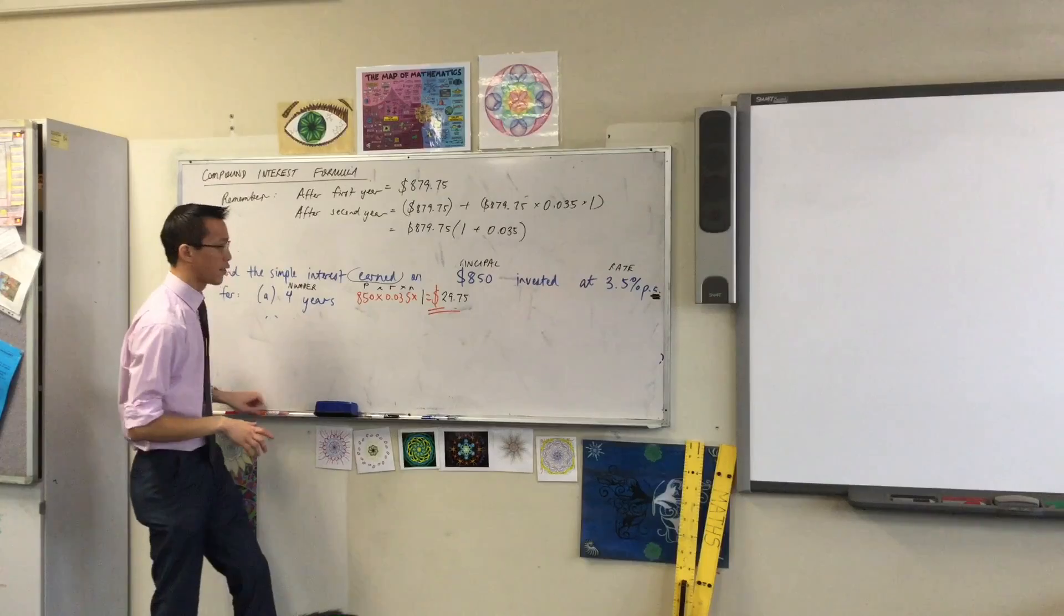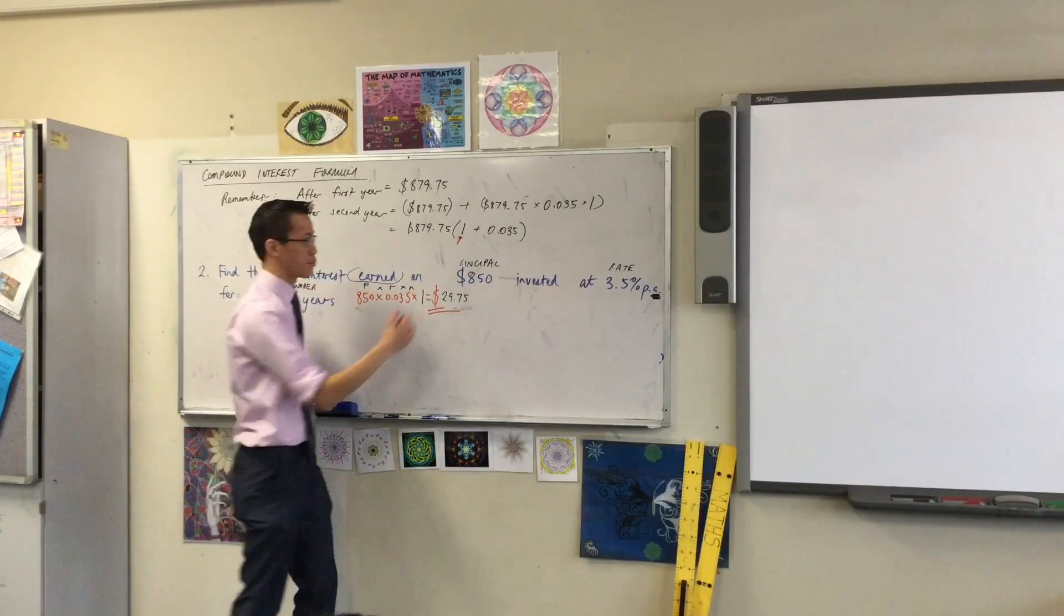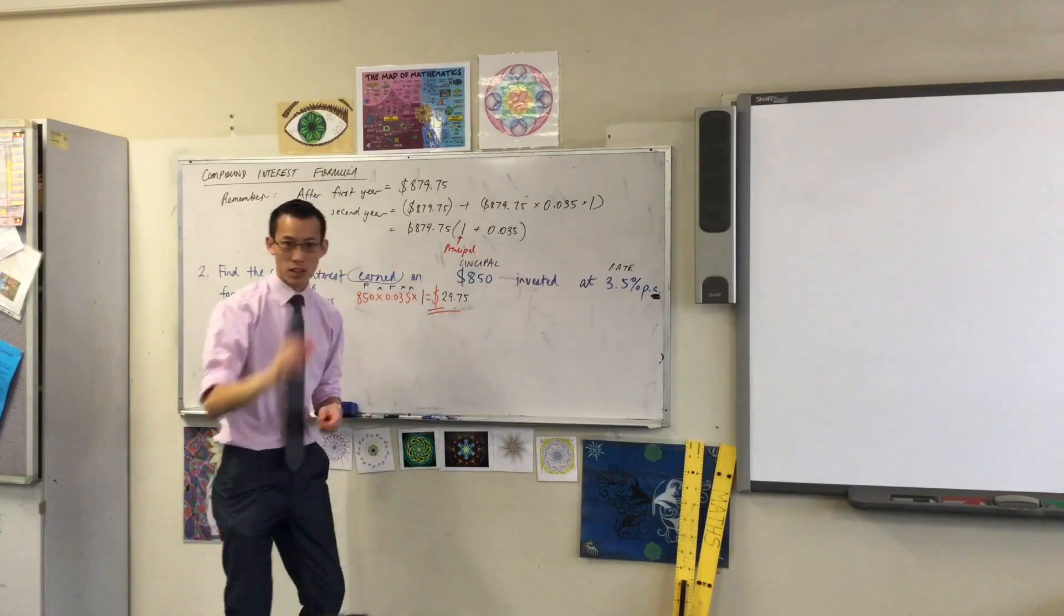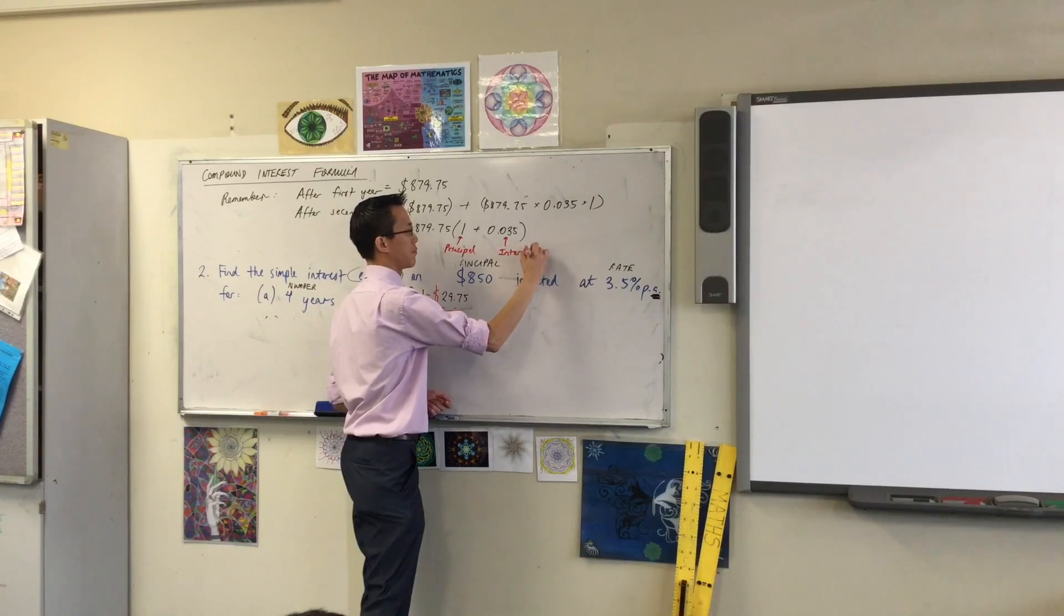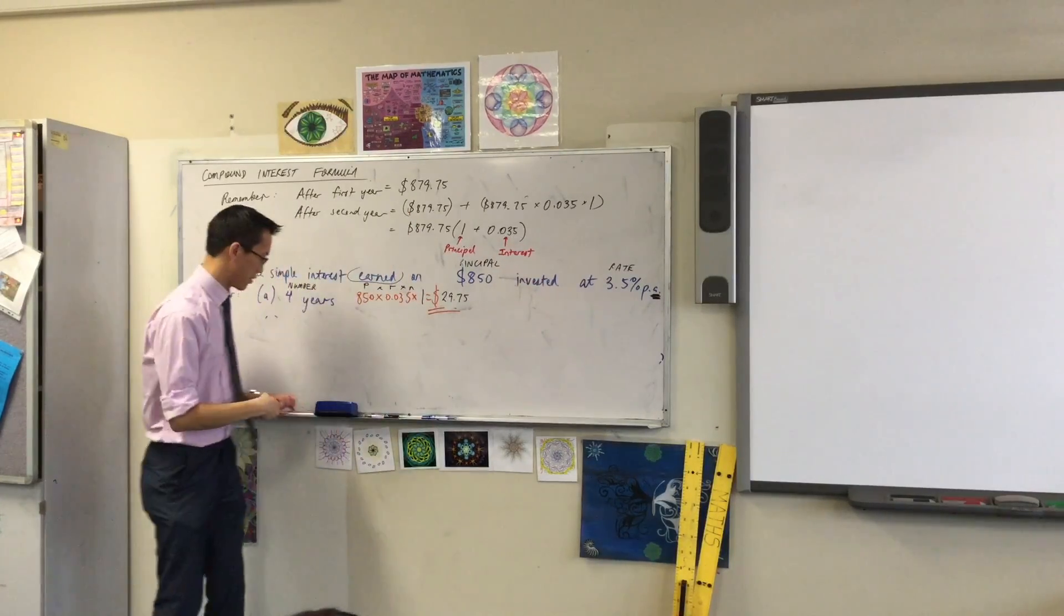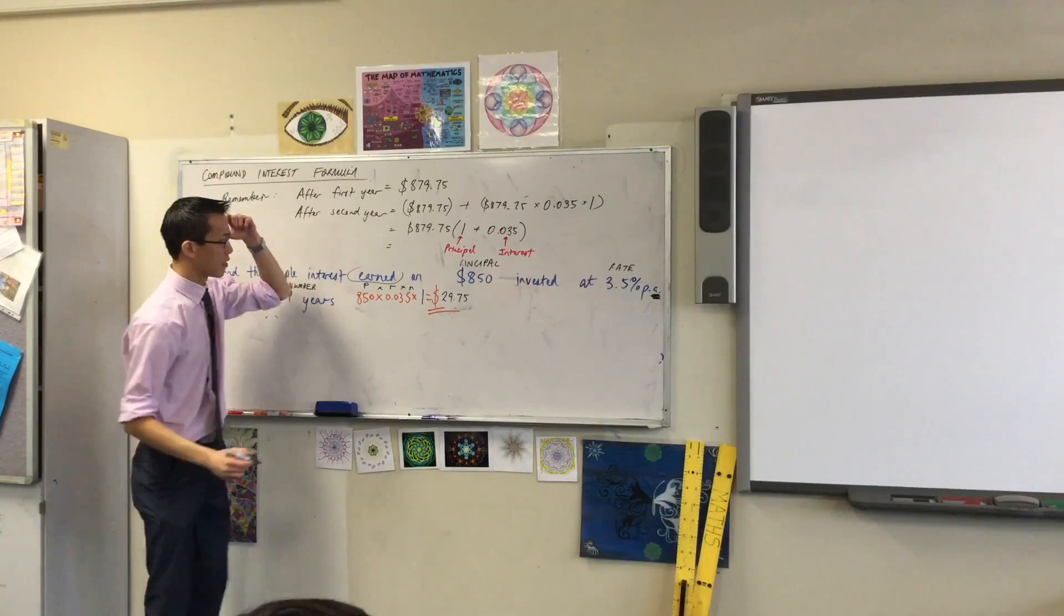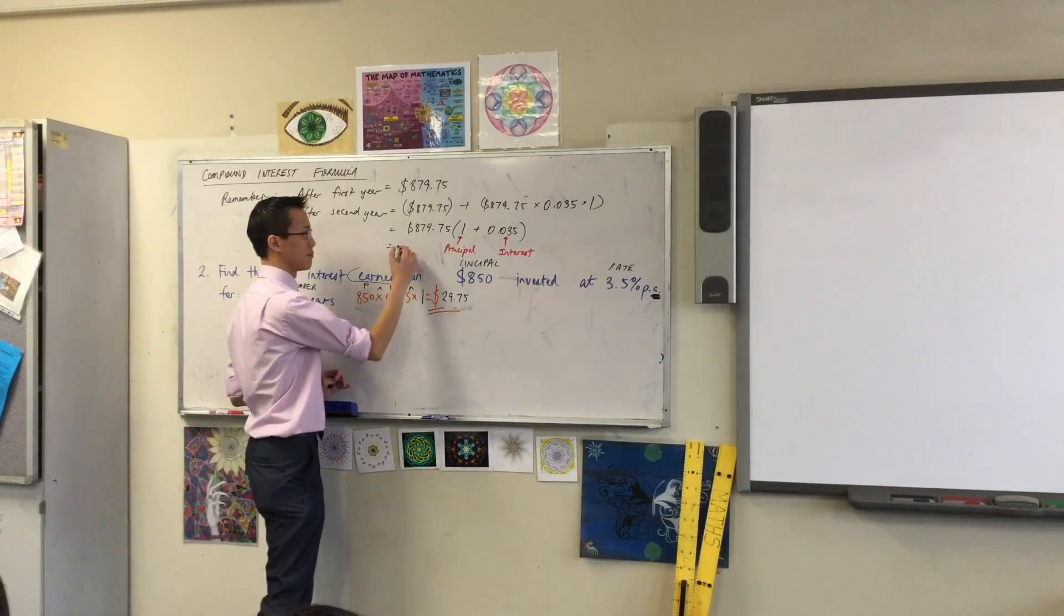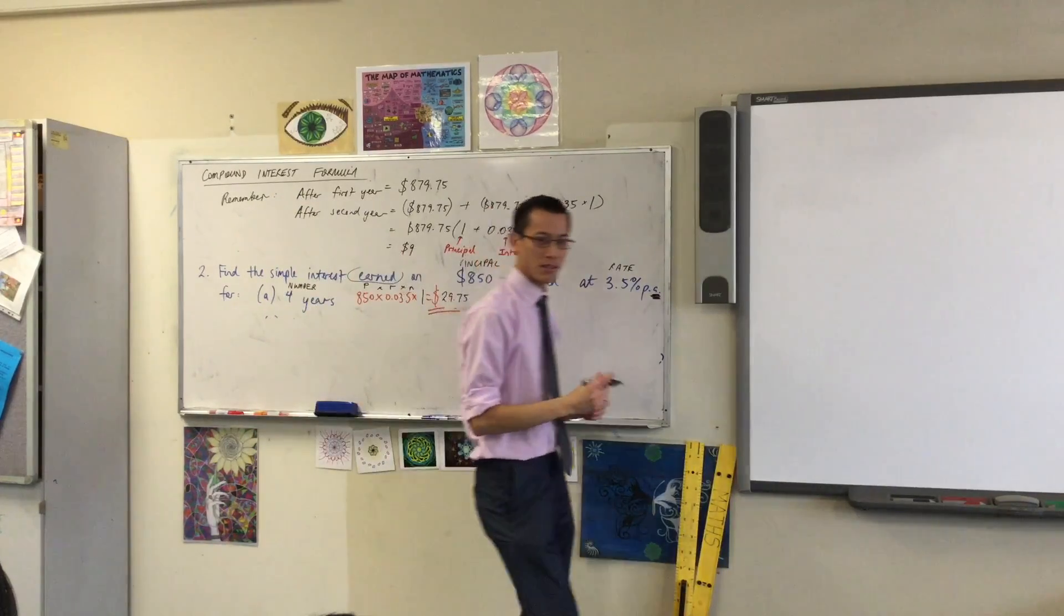Now, just before we leave off this line and actually calculate it, remember, this part is the principal. Just one lot means add another principal back. And this part represents the interest. Can someone work out what the number is? Anyone got it? Surely we're in the 900s by now? 910.